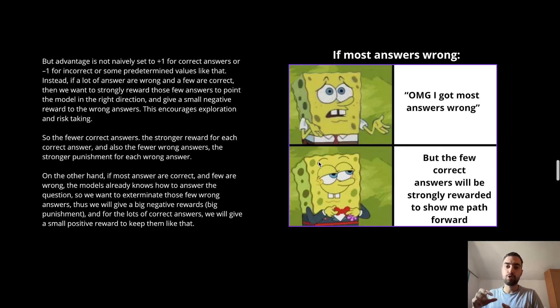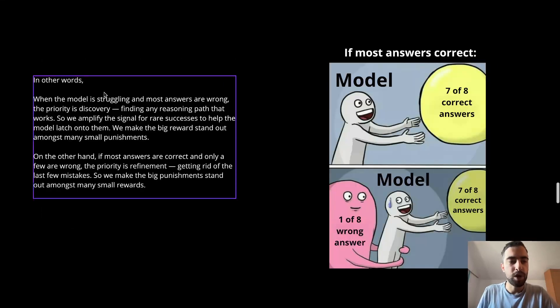And if we kept giving huge rewards to some specific answers, it could overfit to those answers or to those type of answers. And it would even narrow the type of answers it gives. It would stop giving other correct answers. In other words, when model is struggling, the priority is discovery. Amplify the rare signal of success to help model latch onto that signal. And if most answers are correct, then we just need to keep as is without too strong changes to the correct answers. And we just need to refine and make sure it doesn't have these wrong answers.